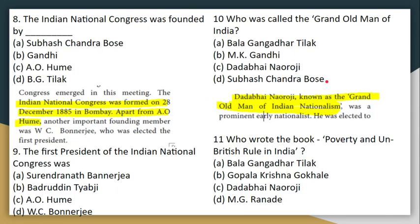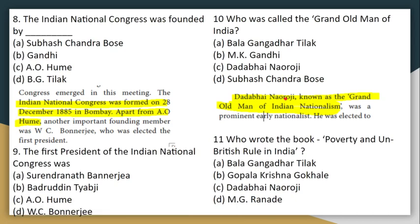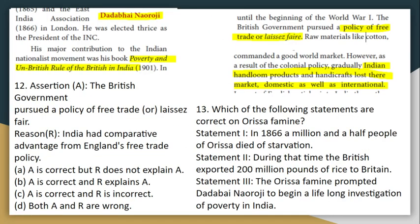Who founded the Indian National Congress? A.O. Hume was the founder, and another founding member was W.C. Banerjee, who was also the first president of the Indian National Congress. Who was called the Grand Old Man of India? Dadabhai Naoroji. Who wrote the book 'Poverty and British Rule in India'? Dadabhai Naoroji — the book was published in 1901.